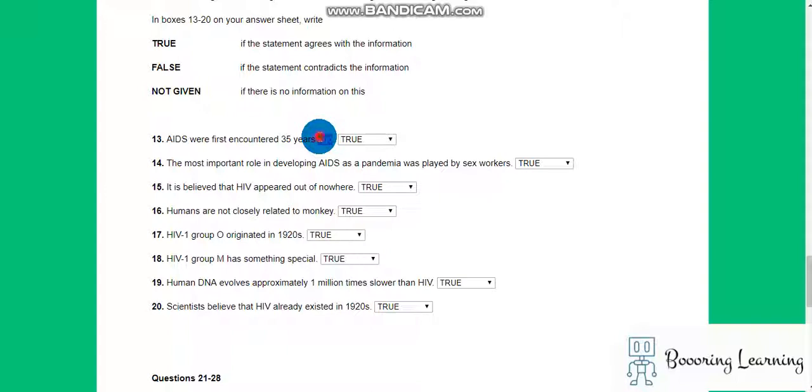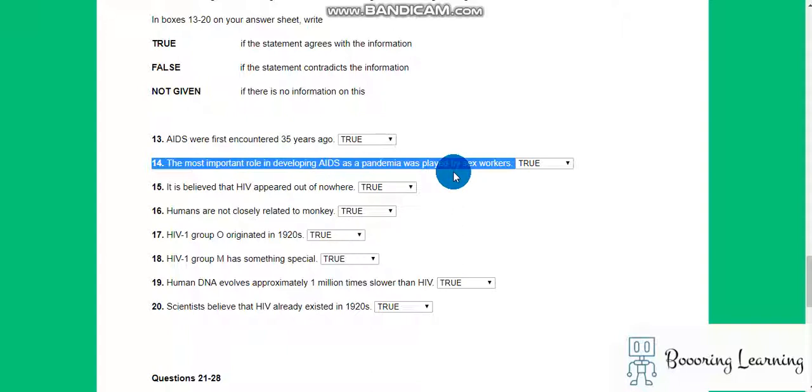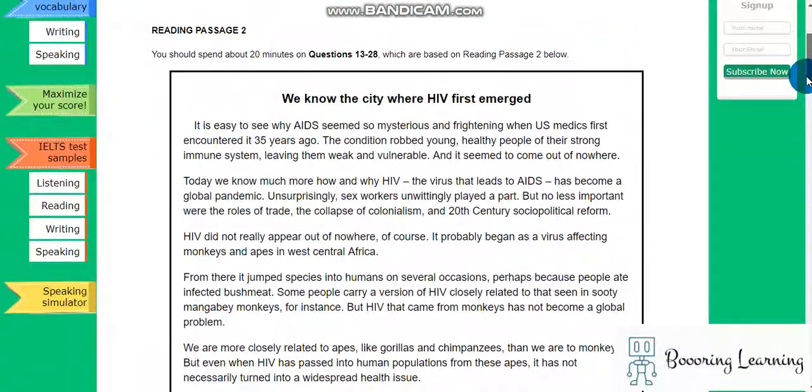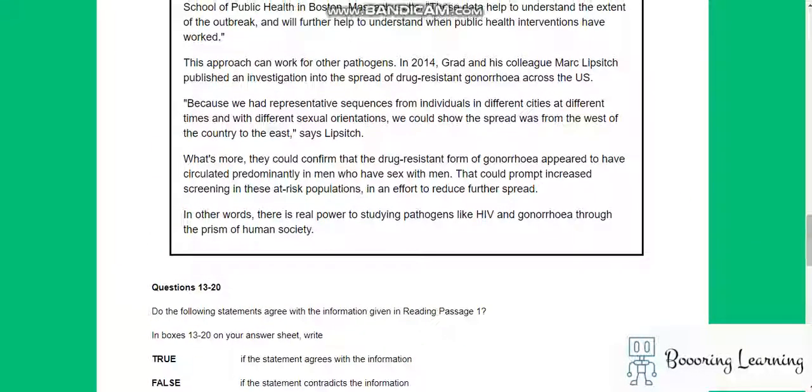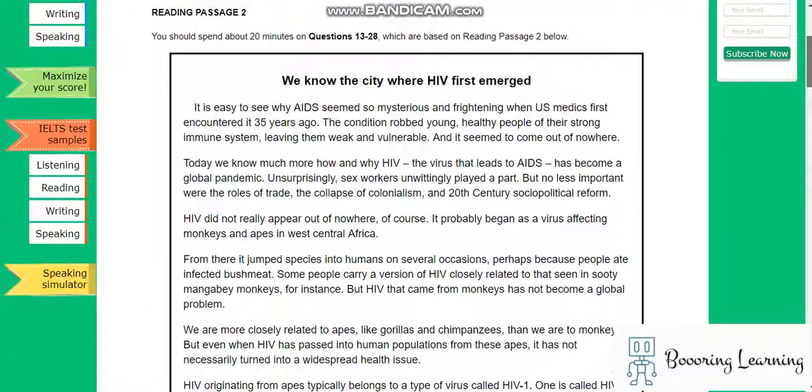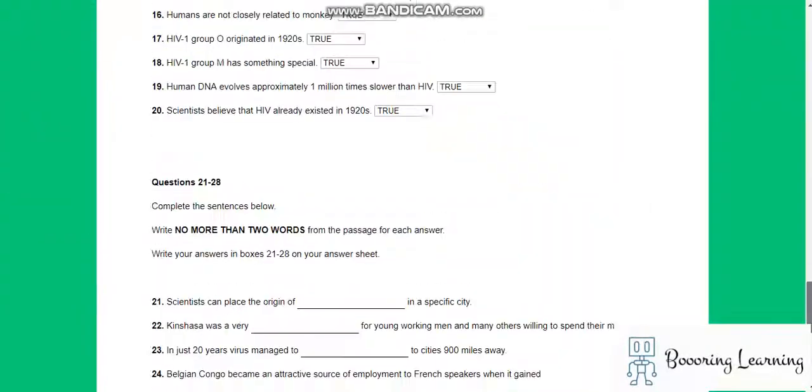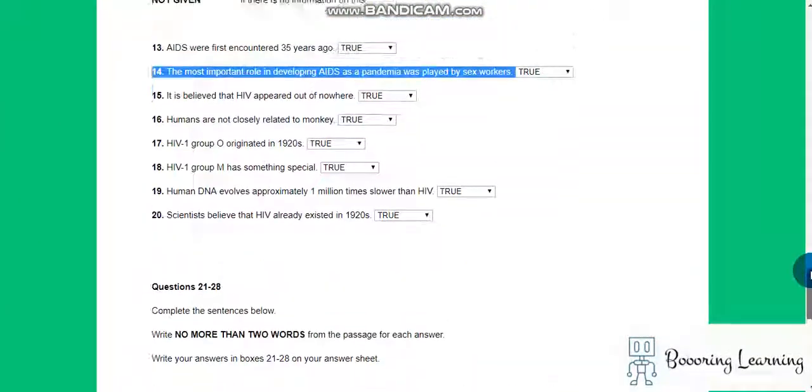AIDS were first encountered 35 years ago - true. The most important role in developing AIDS as a pandemic was played by sex workers. It is believed that HIV appeared out of nowhere. It seemed to come out of nowhere, it's true. Let's say it's true.